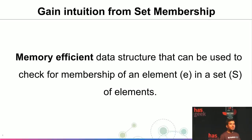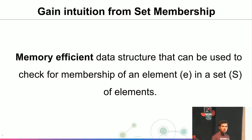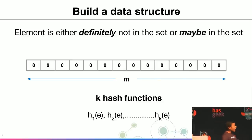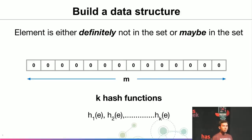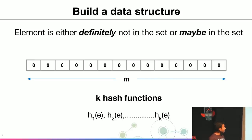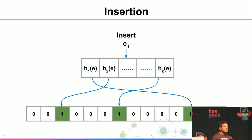Before going into the solutions, let us gain some intuition from the set membership problem. What we want is a memory-efficient data structure to check membership of an element E in a set S. Since we are ready to trade off some correctness, I claim there is a very simple data structure with just two components: a bit string all initialized to 0, and k hash functions. These hash functions can take any arbitrary object — integers, strings, or anything — and return an index into the bit array.